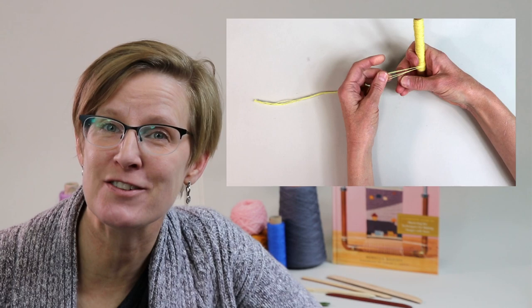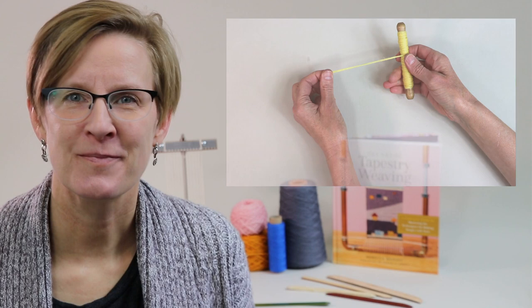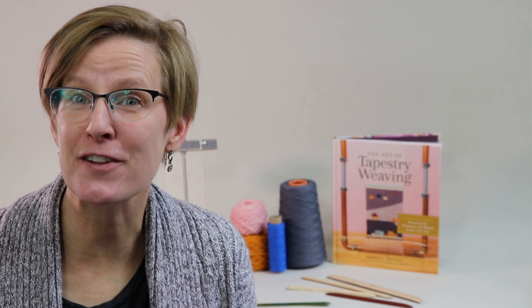Over the last couple years on Change the Shed, I've shown all kinds of projects and in many of them I'm using more than one strand of a tapestry yarn at a time. This is called a weft bundle. Most tapestry yarns are fairly thin and you need to use more than one strand at once to fill the space between the warps appropriately.